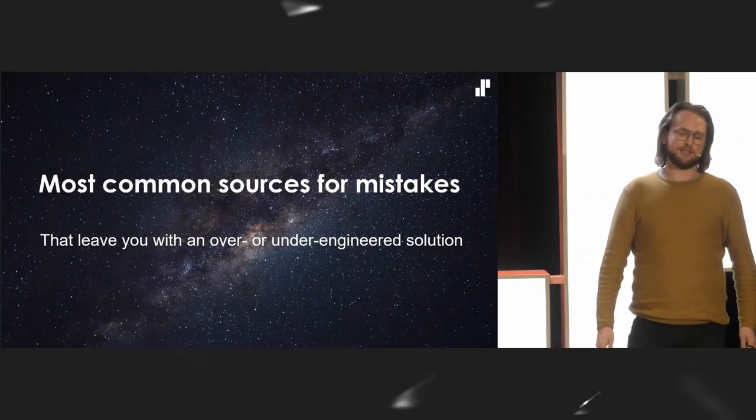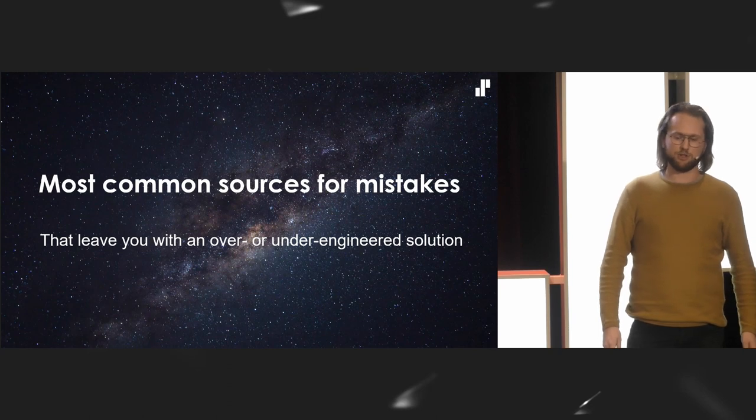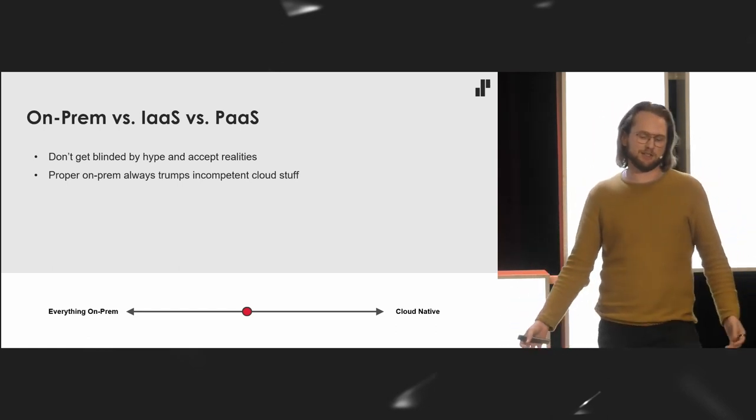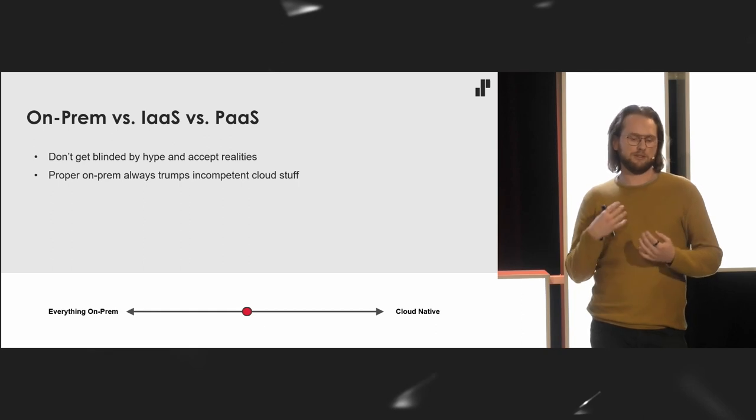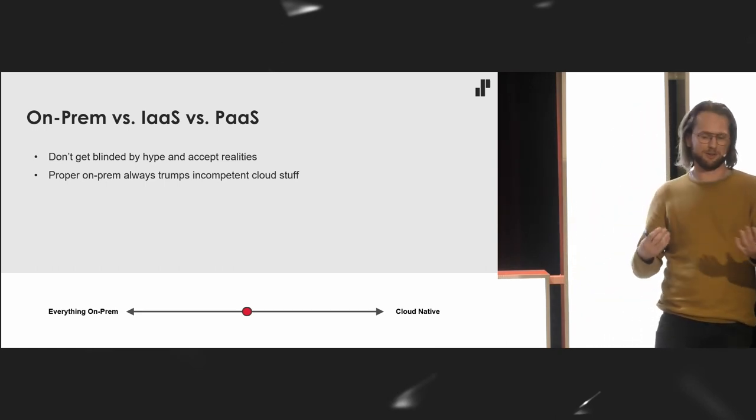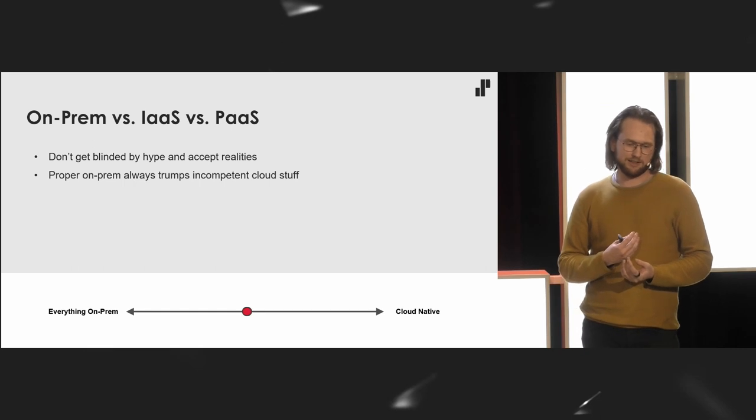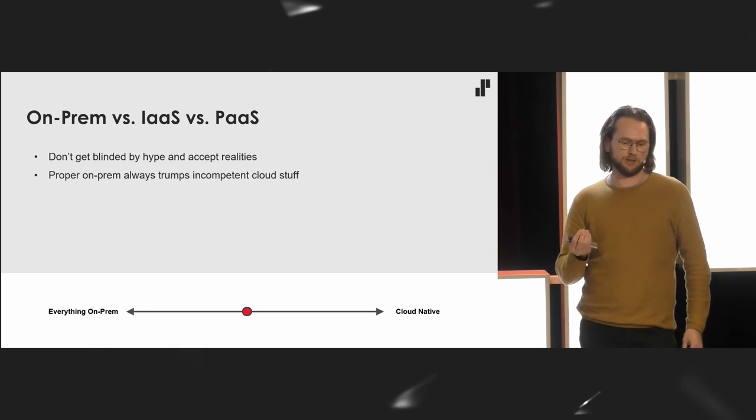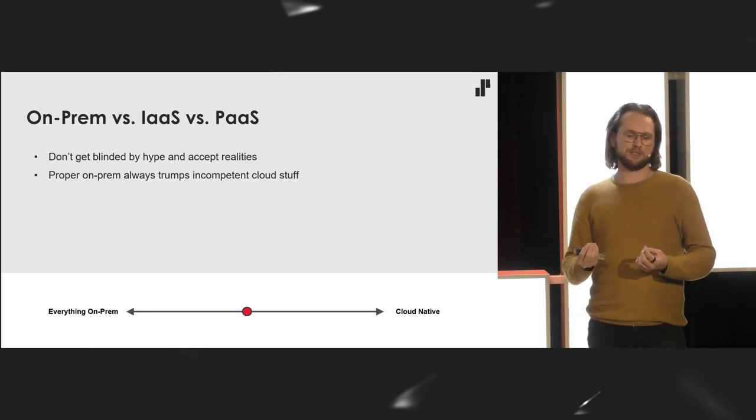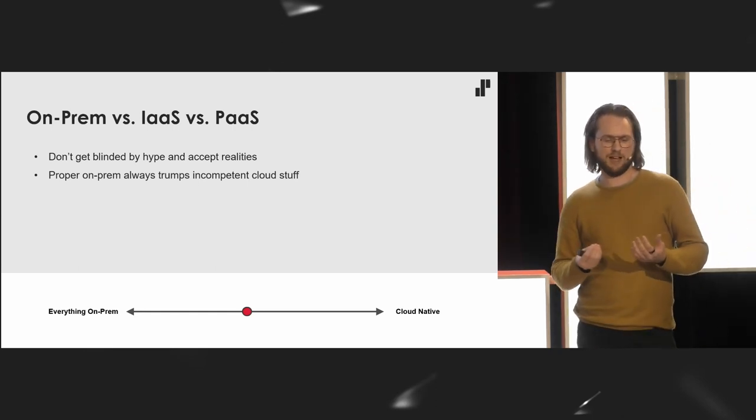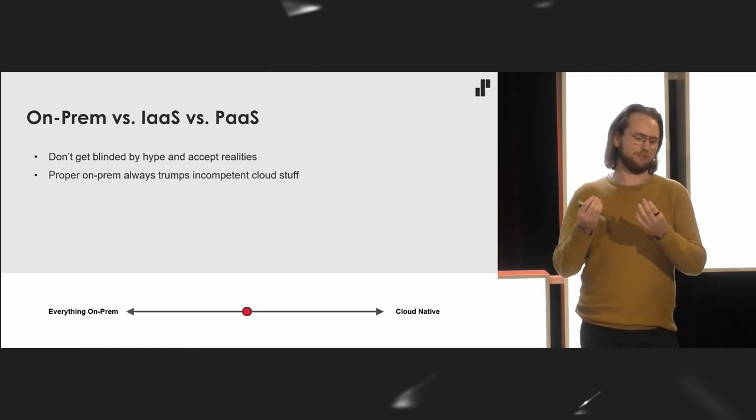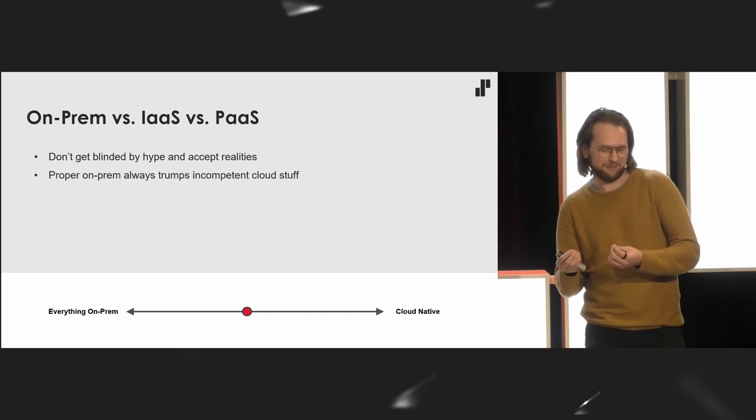So the most common sources for mistakes that will leave you with an over- or under-engineered solution. This is kind of a boring one, traditional one. Everybody has heard about this one. But I want to remind you that even though I'm really a cloud enthusiast, well, my title has cloud in it and I only do cloud projects, but I still want to remind everybody that you shouldn't get too carried away with neat things you can do with cloud. Doing things properly in an on-prem system is better than doing cloud stuff badly, incompetently. However, if you do things incompetently, I think it's better to do them in cloud than on-prem. Personal opinion.